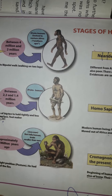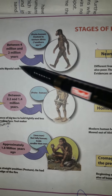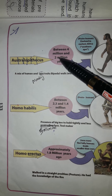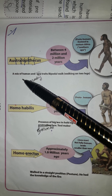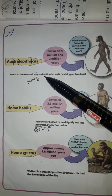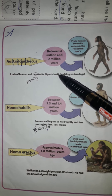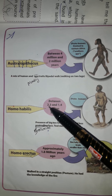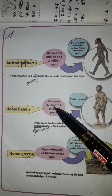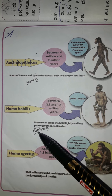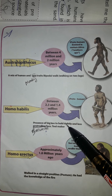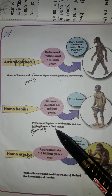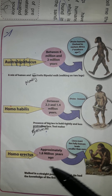Now we will see the stages of human evolution. Australopithecus: between 4 million and 2 million years ago — a mix of human and ape traits, ape means monkey-like. They were bipedal, meaning they walked on two legs. Homo habilis: between 2.3 and 1.4 million years ago — presence of a big toe, less protruding face, and considered a tool maker.